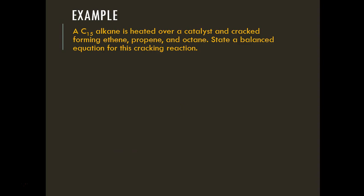Here's an example from an IB exam. An alkane with a carbon number of 15 is heated over a catalyst and cracked, forming ethene, propene, and octane. State a balanced equation for this reaction.